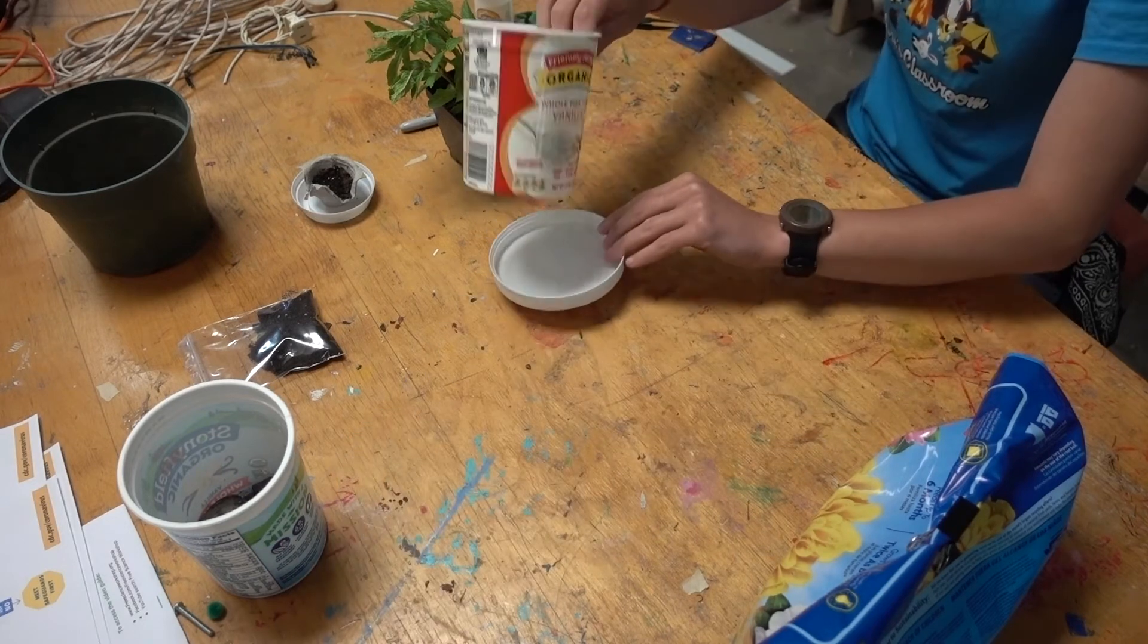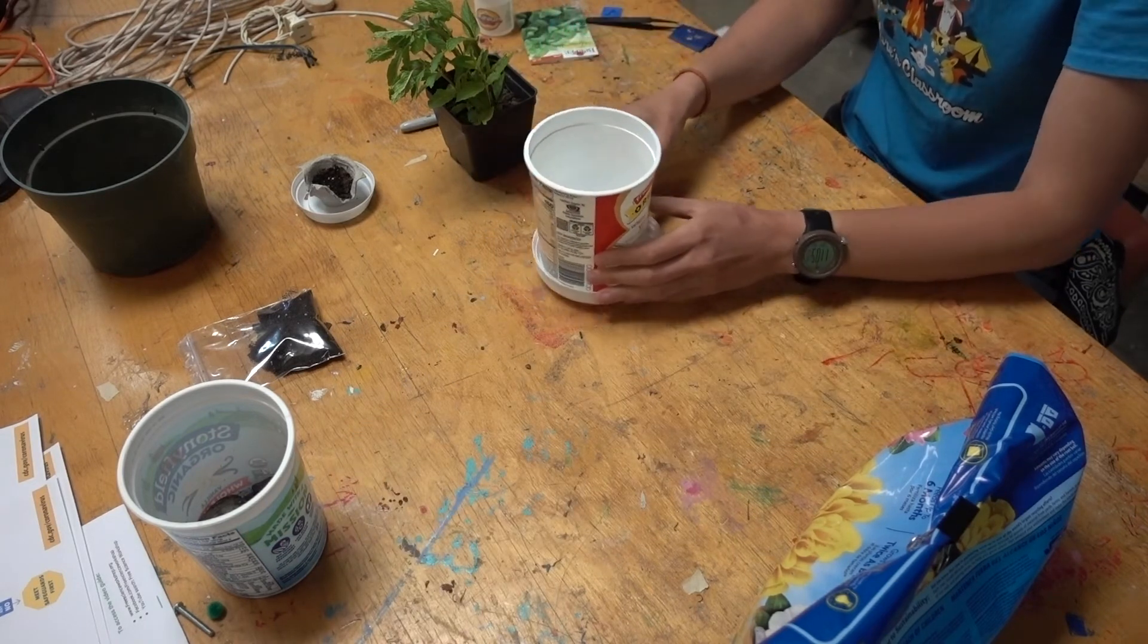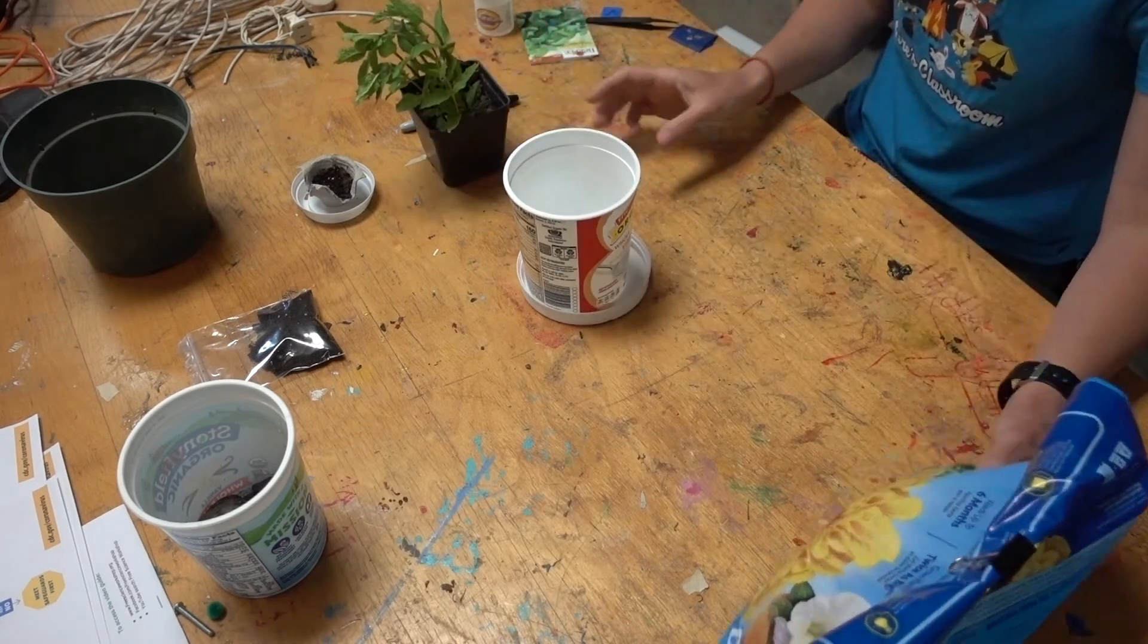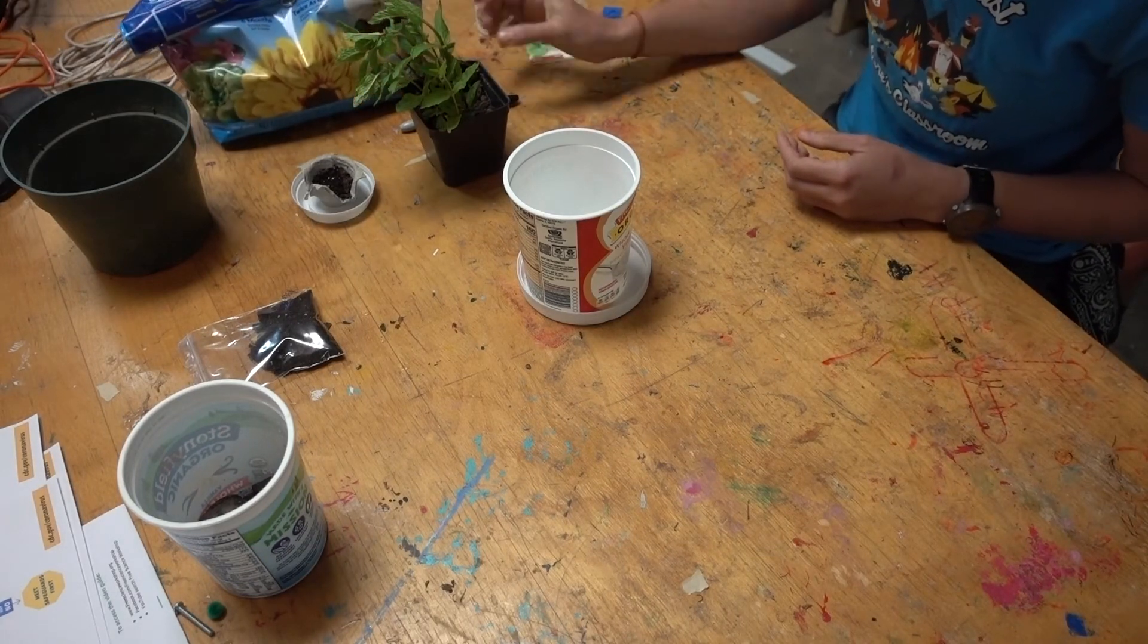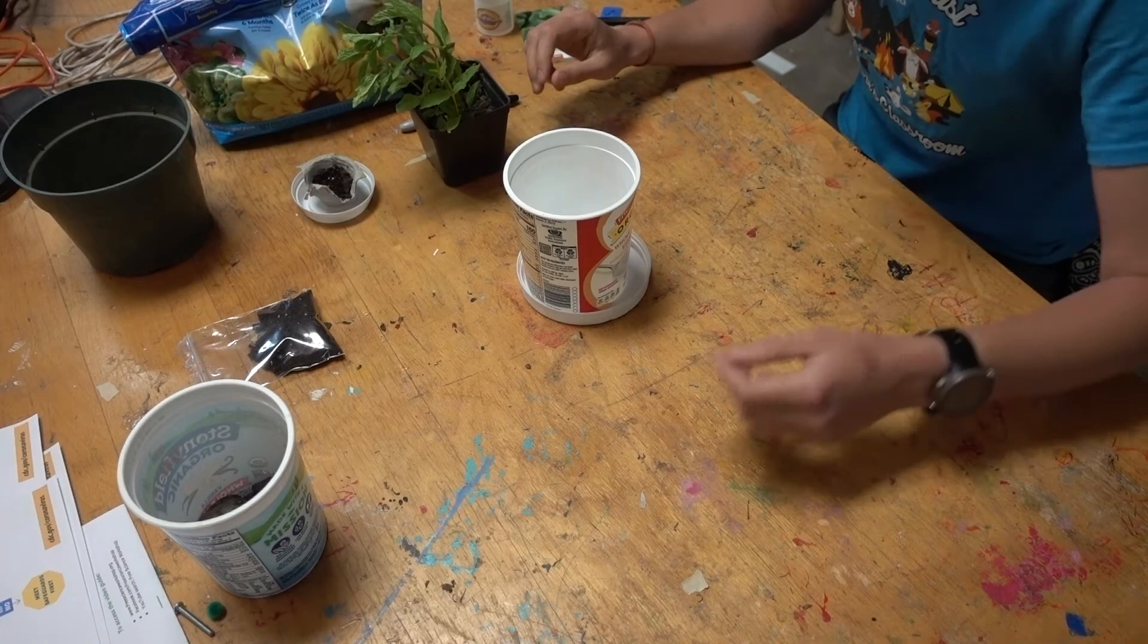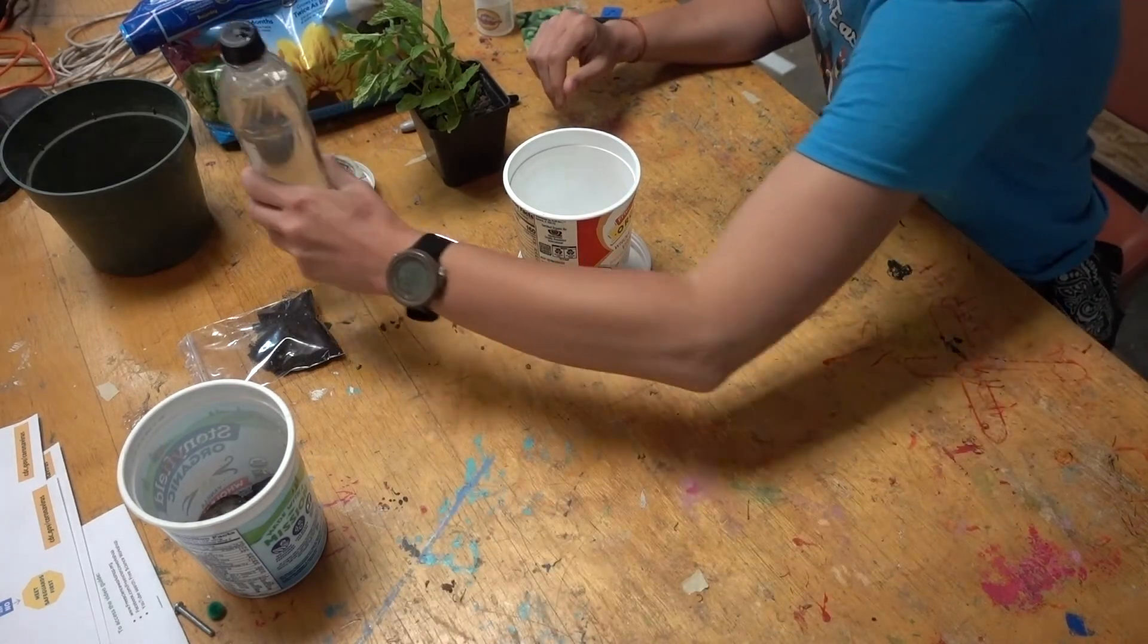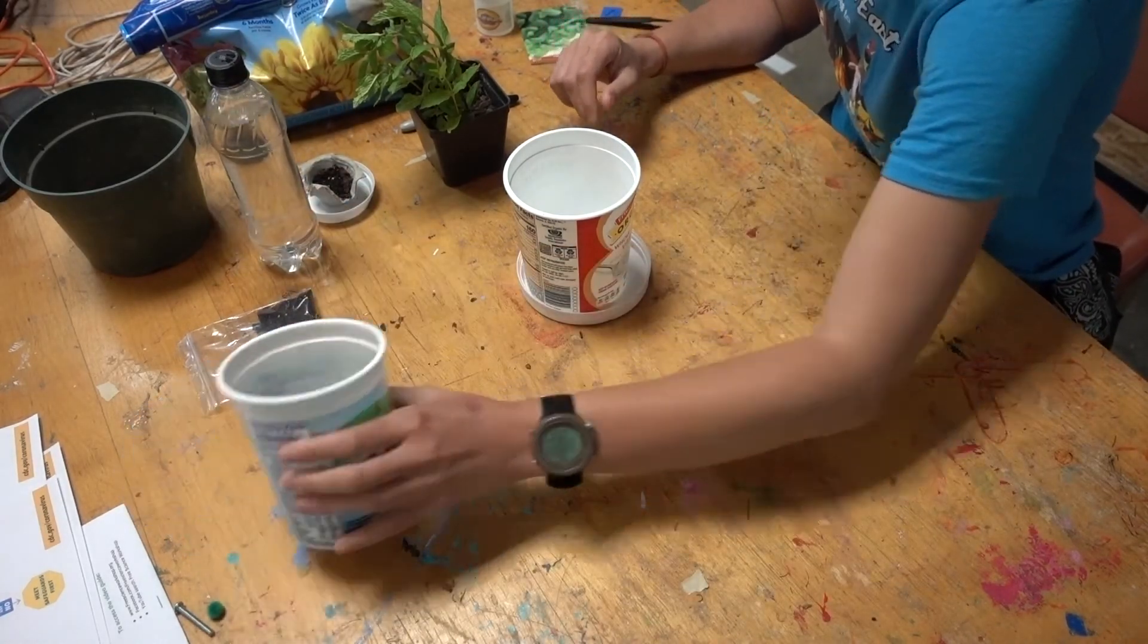If your plant seems ready to upgrade, you'll want to move it into a bigger container, making sure that it's got enough holes for drainage and enough space for your plant to actually grow bigger. For this one, we've got a rinsed-out yogurt container with some holes popped in the bottom, as well as a lid to catch any water that might drain out the holes when we water the plant.